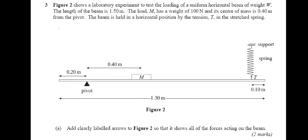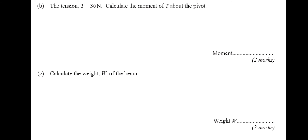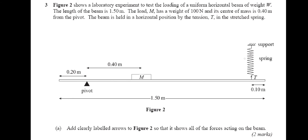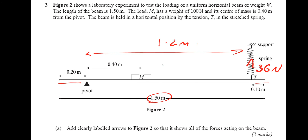From the pivot we've got a normal reaction force. We've got the weight of the mass, which is 100 newtons, and then we've also got the weight of the beam acting in the centre, since it's a uniform horizontal beam — that would be 2 marks. The tension T is 36 newtons. To calculate the moment of T about the pivot: the full beam is 1.5 metres, with 0.2 metres on one side and 0.1 on the other. So the distance from the pivot is 1.5 minus 0.2 minus 0.1, which is 1.2 metres. The turning effect is 36 times 1.2, which is 43.2 newton metres.